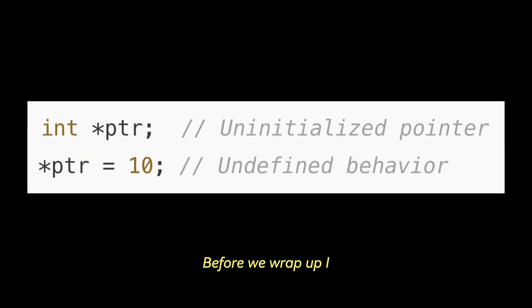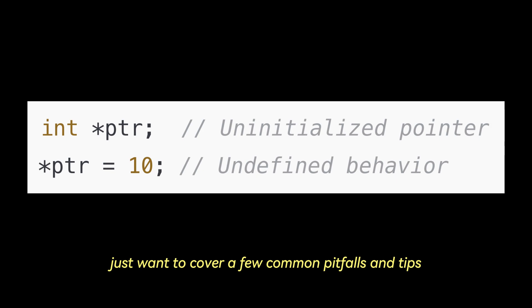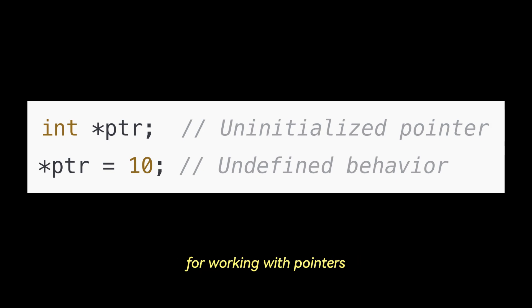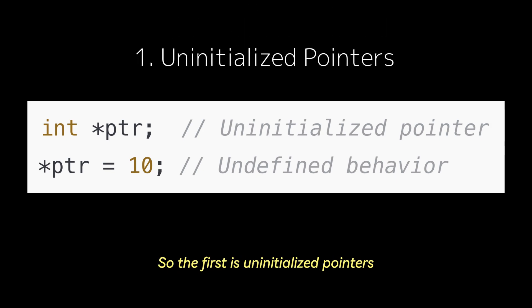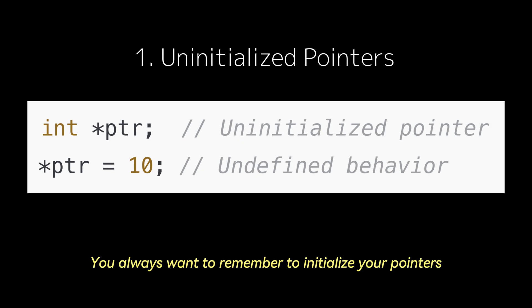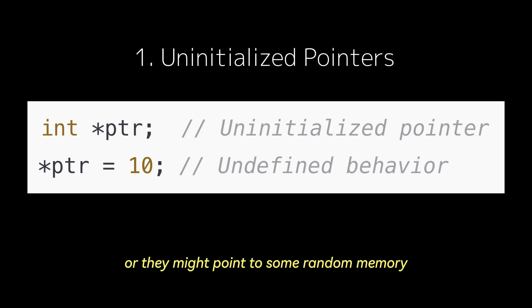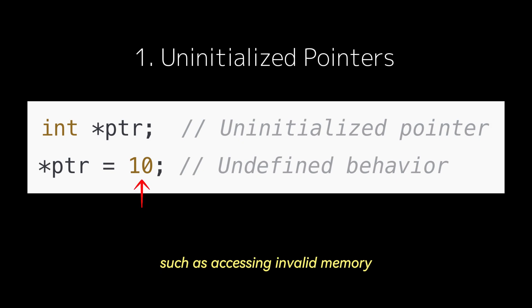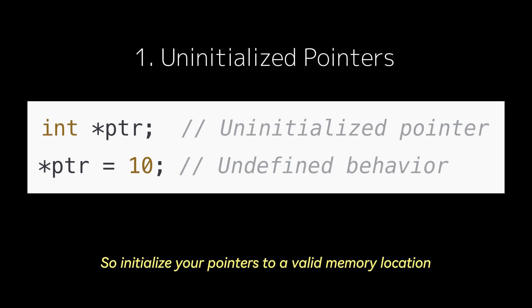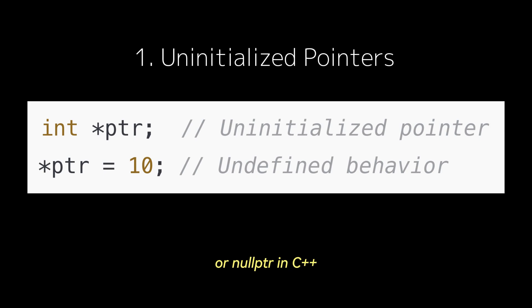Before we wrap up, let's cover a few common pitfalls and tips for working with pointers. The first is uninitialized pointers. Always remember to initialize your pointers, or they might point to some random memory. This can lead to undefined behavior, such as accessing invalid memory or causing a crash. So initialize your pointers to a valid memory location, or to null or nullptr in C++.